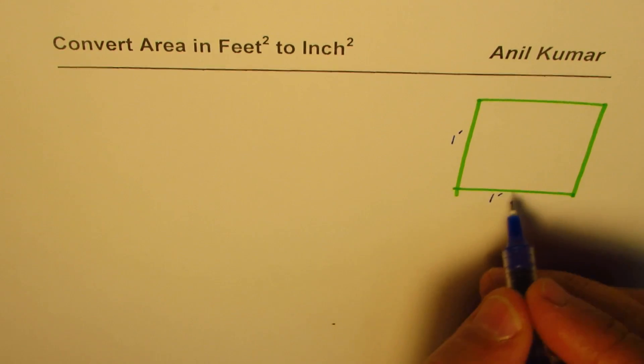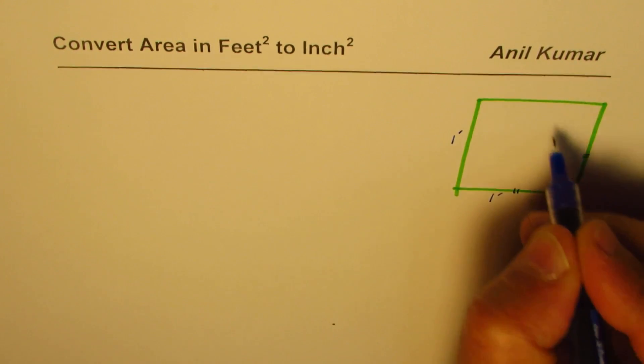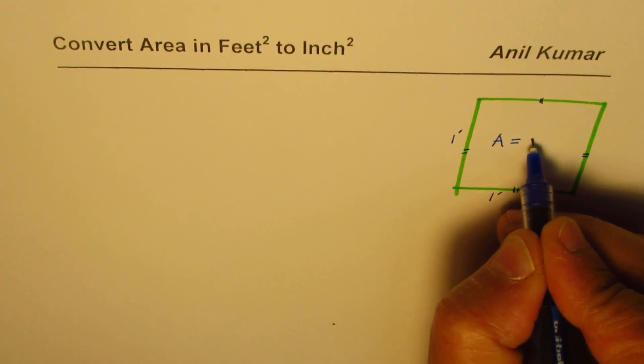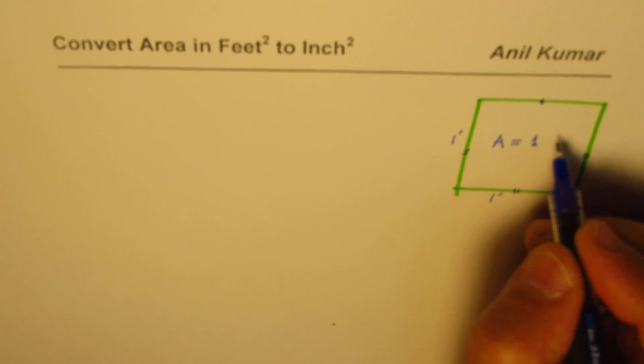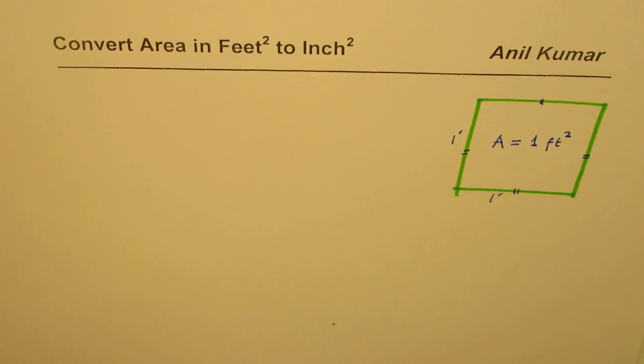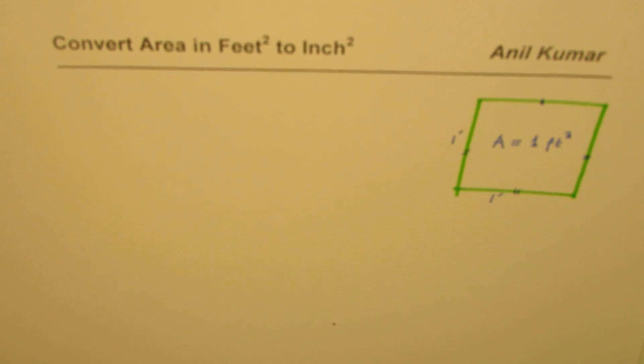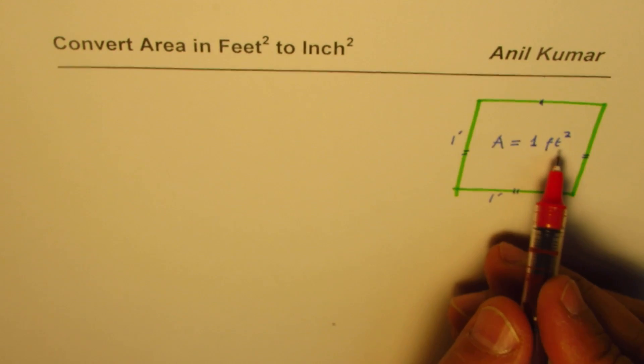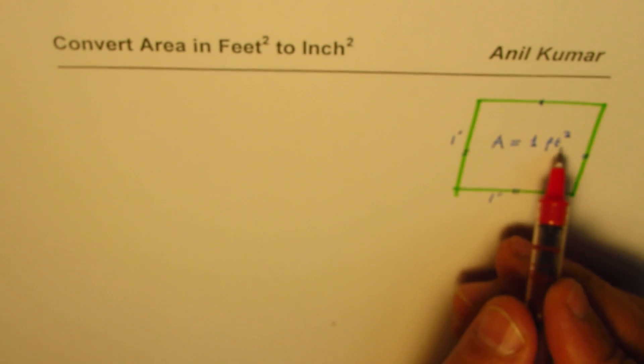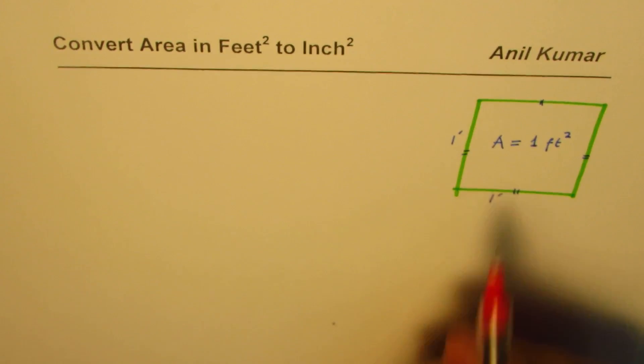If each side of this square is one foot, what is the area? The area is one square foot - one times one. Now my question is: convert this area to square inches. How do you convert one square foot to square inches?